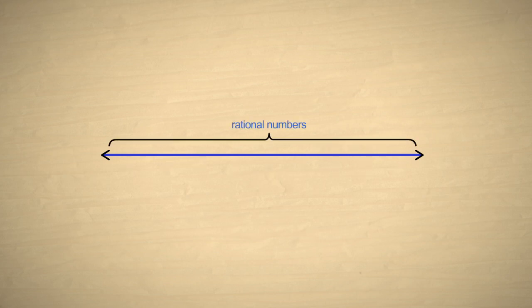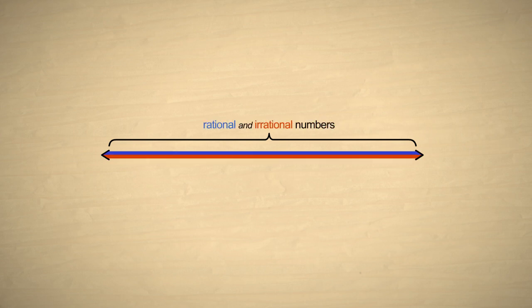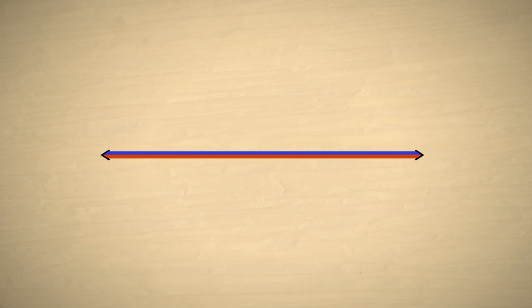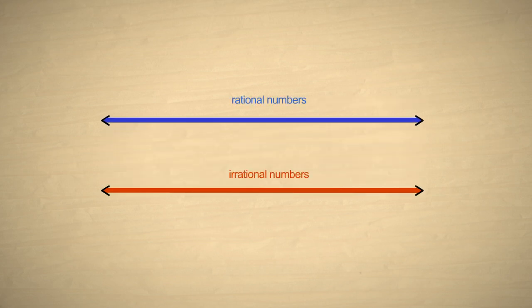Since any interval contains an infinite number of rational numbers, you might think that you would almost certainly pick a rational number. However, remember that every interval also contains an infinite number of irrational numbers. So maybe the chances would be fifty-fifty that you would pick a rational number as opposed to an irrational number. However, this is not the case. The chances are essentially zero that you would pick a rational number. This is because there are vastly more irrational numbers than rational numbers.